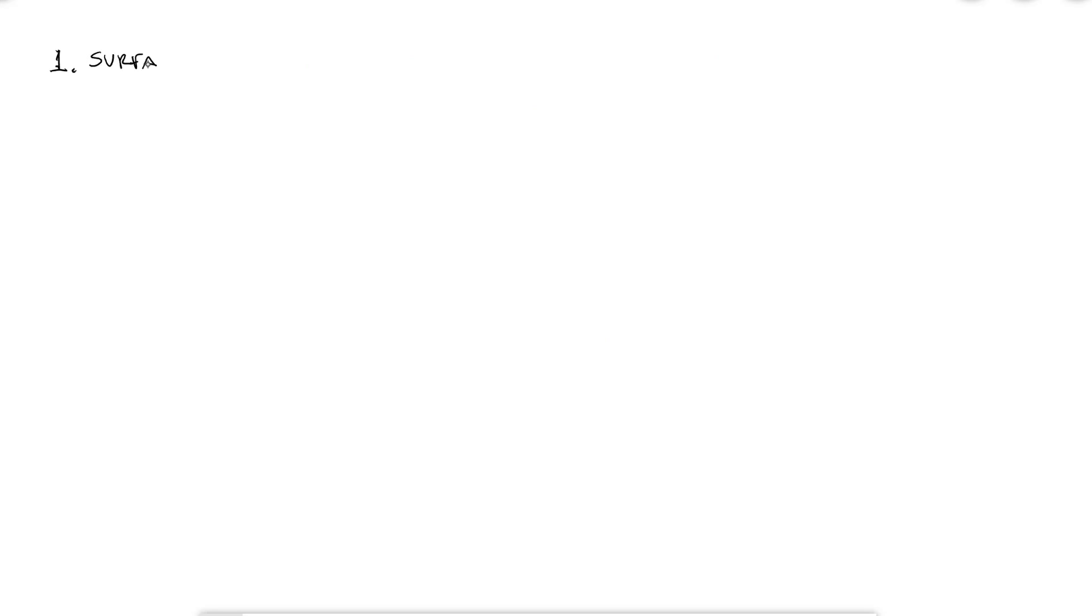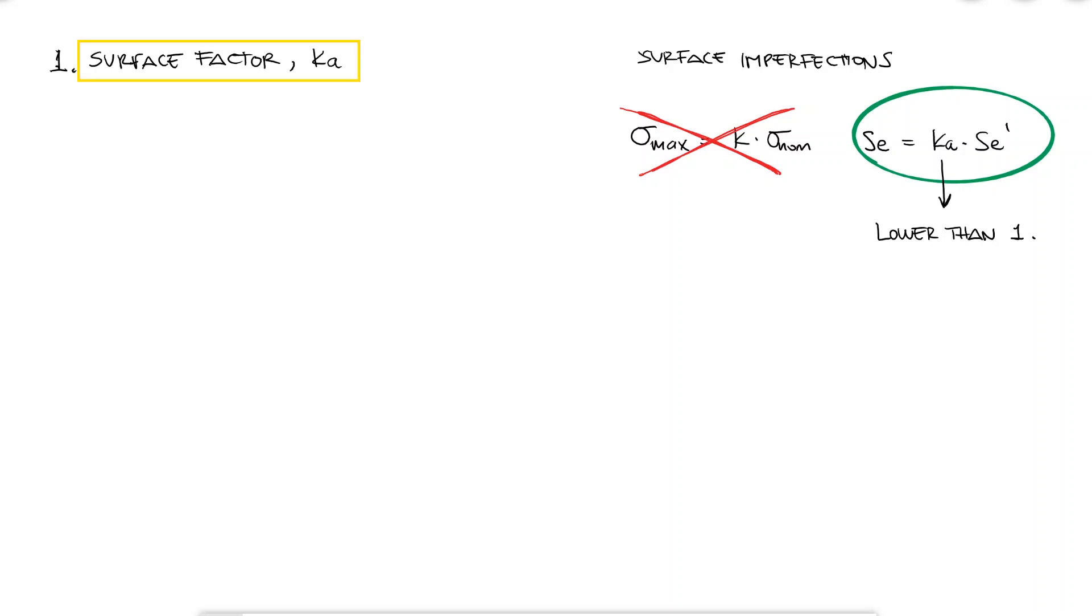Let's start by looking at the surface factor, Ka. Since stresses are usually highest at the surface, any imperfections or surface roughness will act almost as stress concentrations, which will increase the chances of localized plastic strains or crack initiation. Now, remember that for fatigue calculations, we are not modifying and increasing the stresses with stress concentration factors. For fatigue, we are modifying and lowering the fatigue strength, or what you used to call the maximum allowable stress, and we do this by lowering the endurance limit with, in this case, the surface factor.